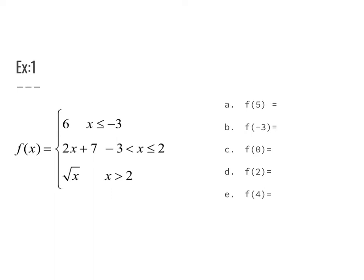For our next example, we have three different functions. f(x) equals 6 for every x value less than or equal to negative 3 — a constant, so it's a horizontal line. Between negative 3 and 2, we have 2x plus 7. And if x is greater than 2, we have the square root of x. Depending on your x value, we identify which portion to use.